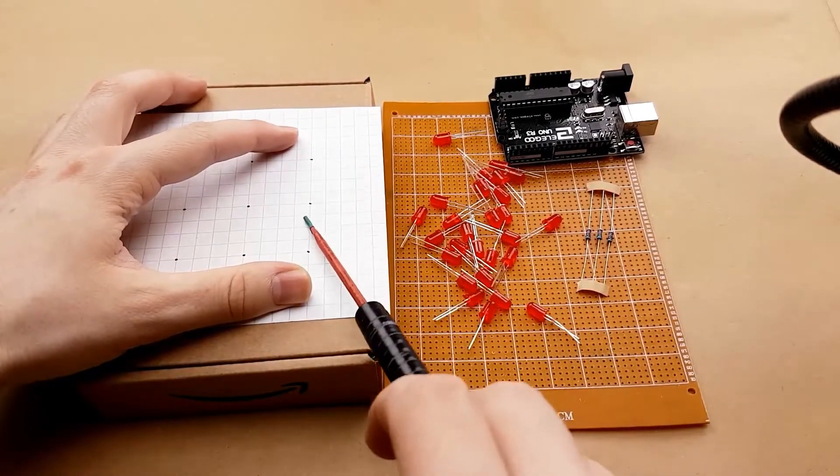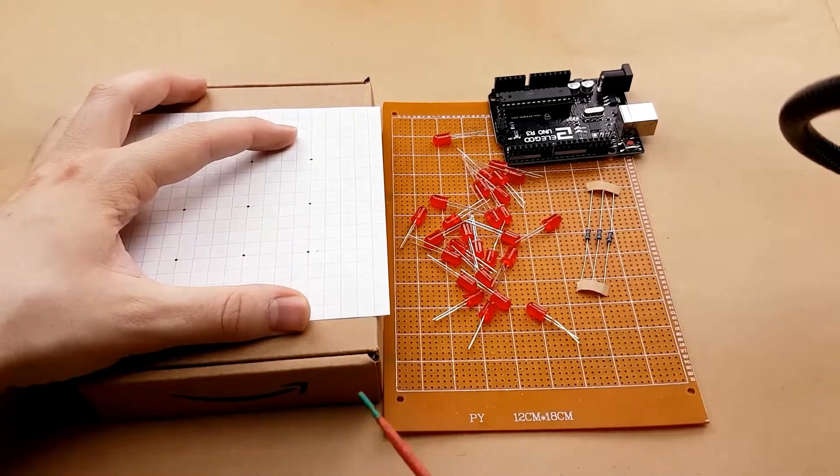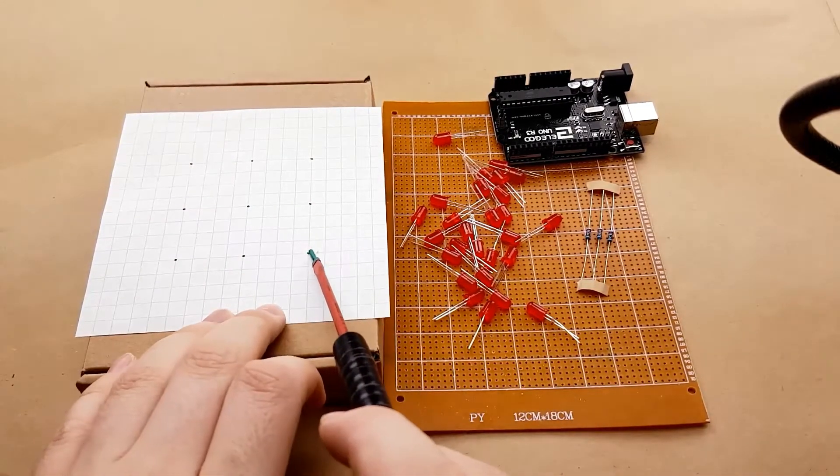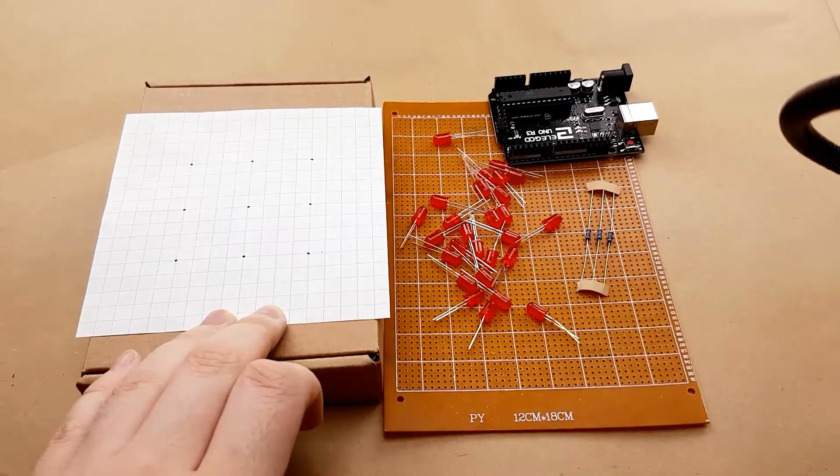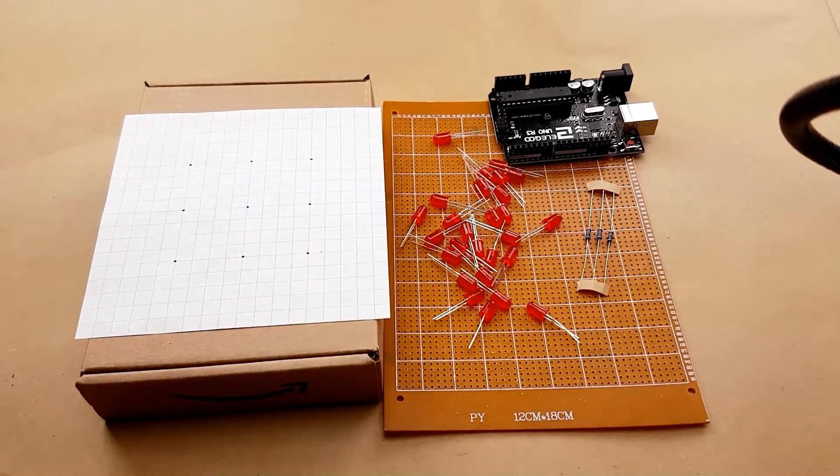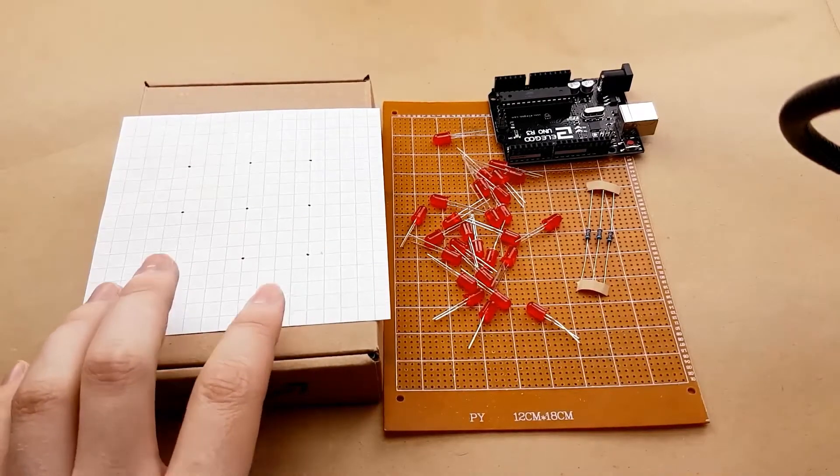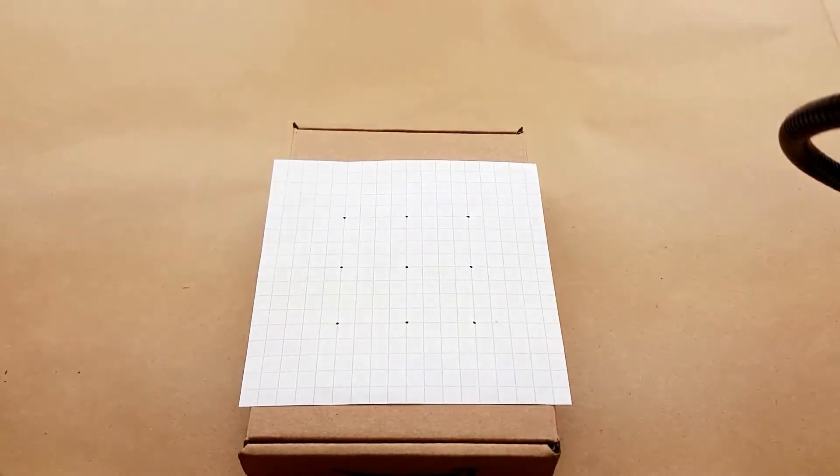I'm going to mark these holes and then I'm going to poke through the box so that the LED can sit in the hole in the box. And that'll just give it something to support it so that when we're bending the legs it'll be much easier to solder them all together. So just to make sure that that doesn't slip around while I'm poking the hole through it, I'm just taking some masking tape.